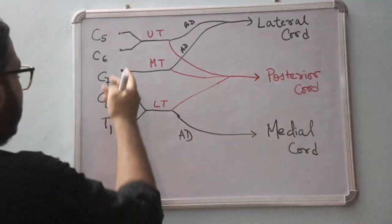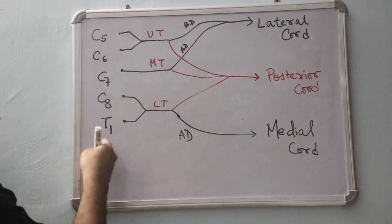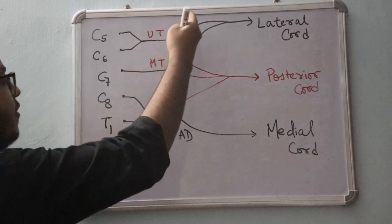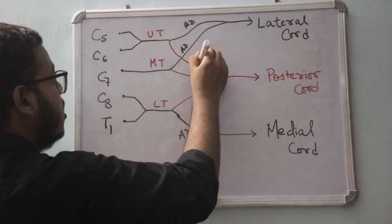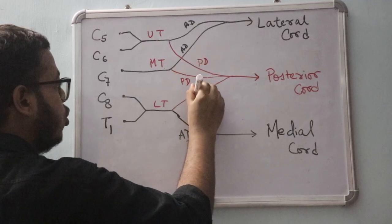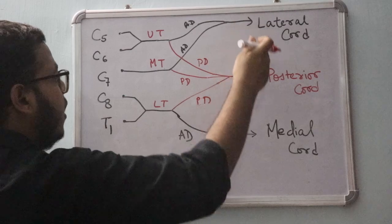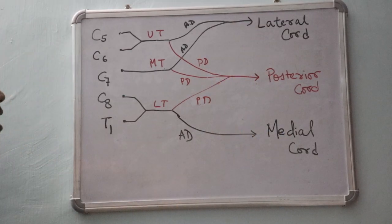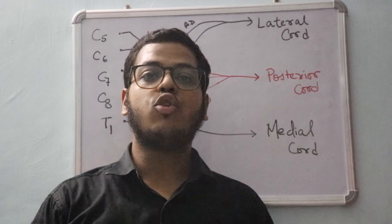So we have: roots C5 to T1, trunks — upper, middle, lower — anterior and posterior divisions of each trunk, and then the three cords. Now let us study the branches.